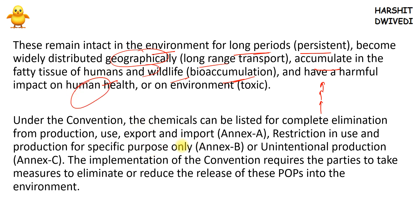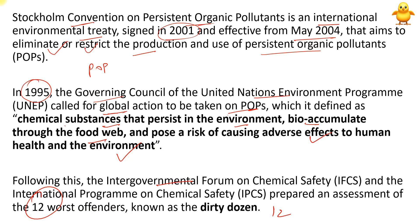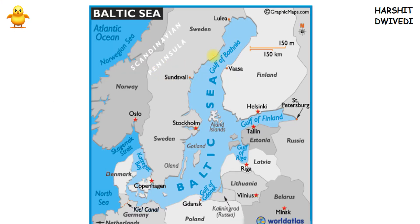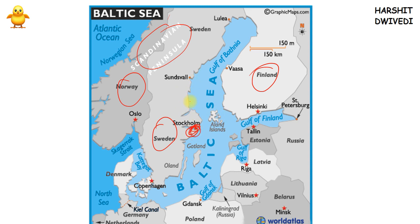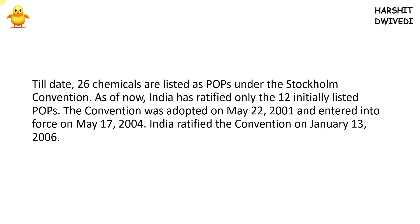Now, the convention is called the Stockholm Convention. Stockholm is a city on the Scandinavian Peninsula. Looking at the map, here is Norway, here is Sweden, and here is Finland. Stockholm is located in Sweden, near the Baltic Sea at its edge. The sea between Finland and Sweden is the Baltic Sea, with the Gulf of Bothnia between Sweden and Finland, and the Gulf of Finland between Finland, Russia, and Estonia.